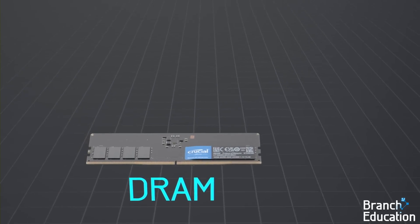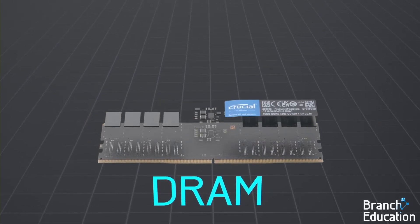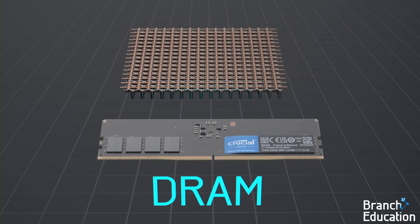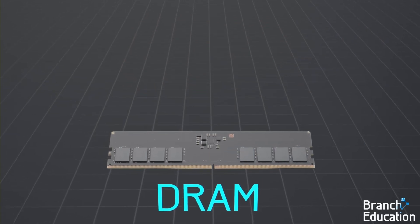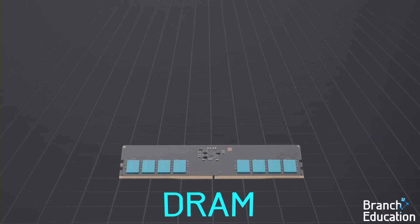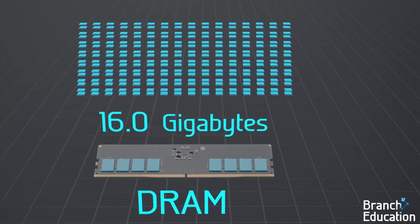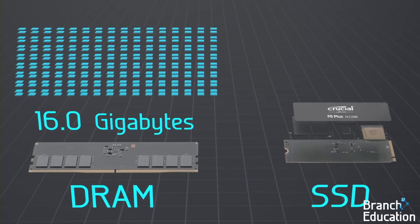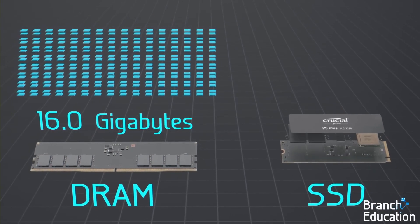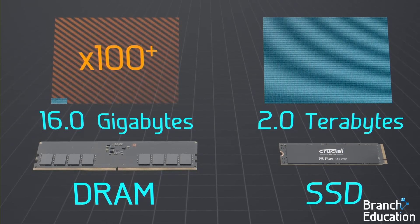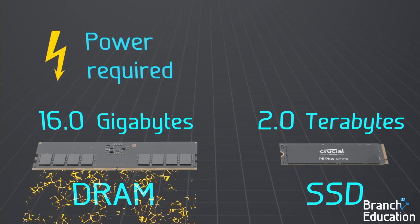However, speed is just one factor. DRAM is limited to a 2D array and temporarily stores 1 bit per memory cell. For example, this stick of DRAM with 8 chips holds 16 gigabytes of data, whereas a solid-state drive of a smaller size can hold 2 terabytes of data — more than 100 times that of DRAM.